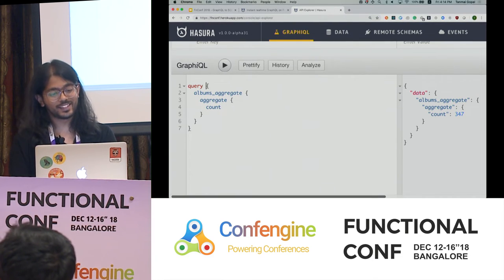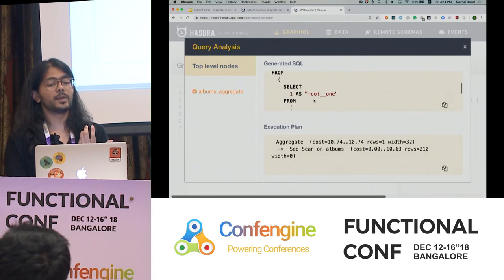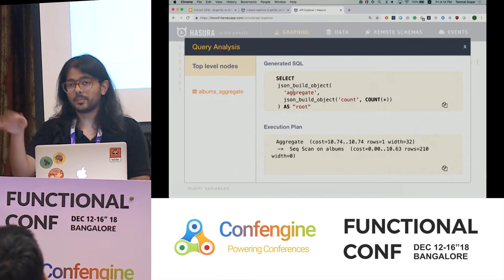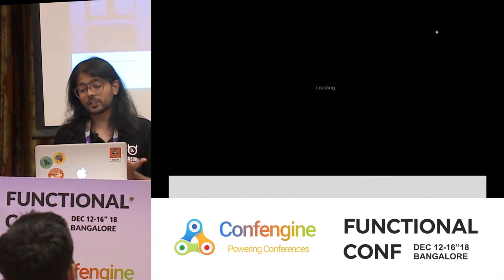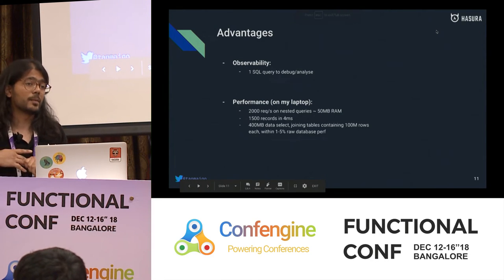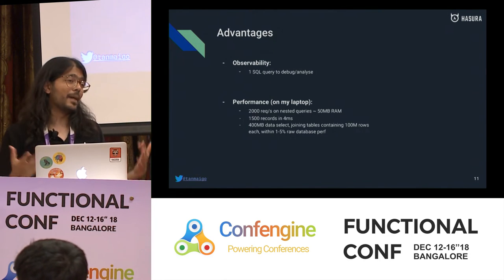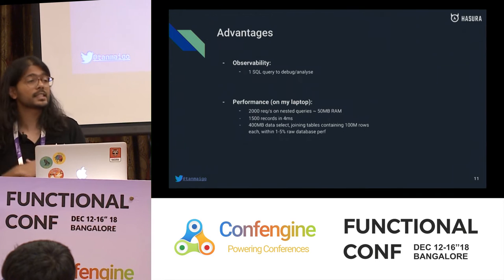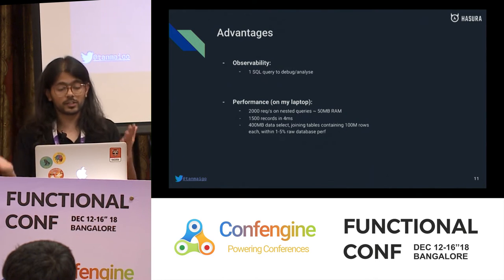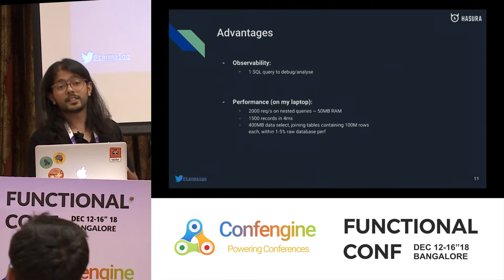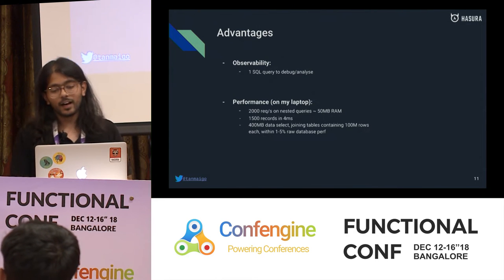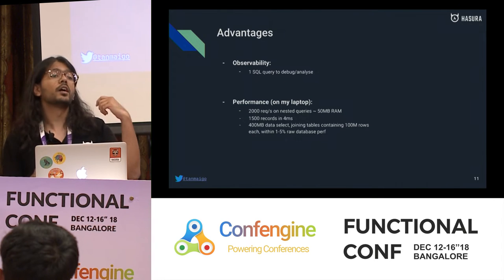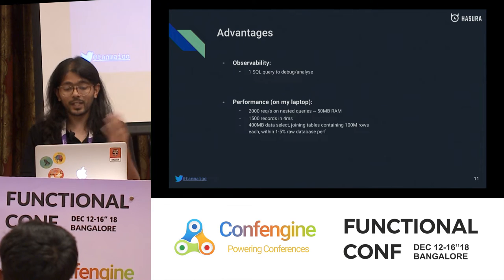I can look at the actual SQL query being generated, give it to my DBA, and they can figure out the right indexes. The performance is extremely high: on nested GraphQL queries hitting a join, we can serve about 2,000 requests per second in 50 MB of RAM. You can fetch about 1,500 records in just 4 milliseconds because it's just one great SQL query that Postgres knows how to optimize. Some users run GraphQL queries fetching 400 MB of data joining tables with hundreds of millions of rows — within 1 to 5% performance difference from a raw Postgres query with no HTTP layer at all.